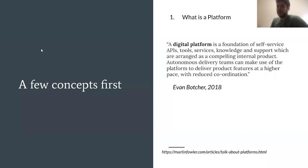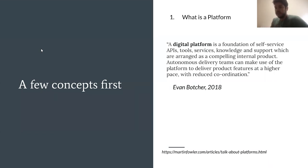Before we go into the details, I wanted to clarify some terms. The first one is: what is a platform? This is quite hyped right now. Basically, you have the definition from Evan Botcher, which I think is pretty good. A digital platform is a foundation of self-service APIs, tools, services, knowledge, and support, arranged as a compelling internal product that autonomous delivery teams can use to deliver product features at a higher pace with reduced coordination. Essentially, it's a team or group of teams that tries to make the feature teams or product teams in the company faster.